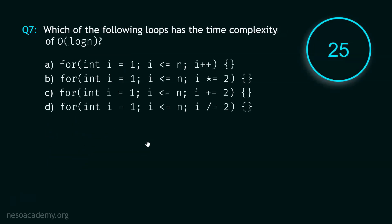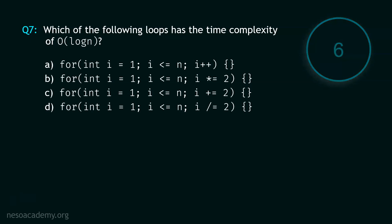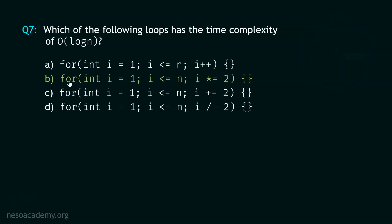Now let's move to question number 7, and your time starts now. Stop. The correct option is option B. For these type of loops where the update expression involves multiplication by a constant, the time complexity is logarithmic. That is why the time complexity of this loop is also Big O of log N.